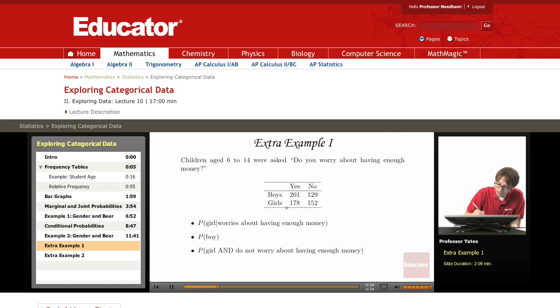So coming up with the marginals here, 279, 281, and over here we have 330 and 330, so we have 660 total.